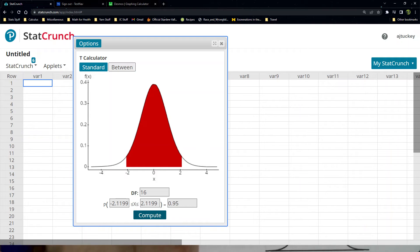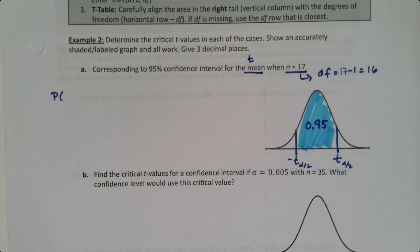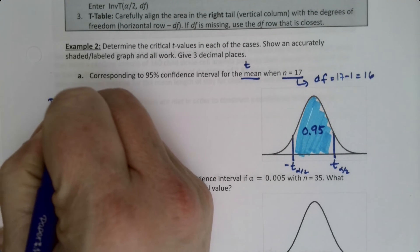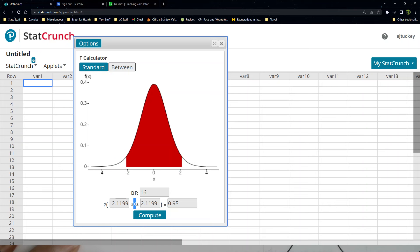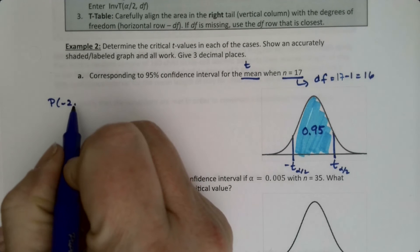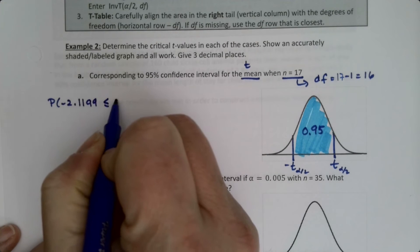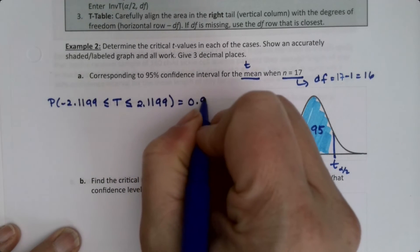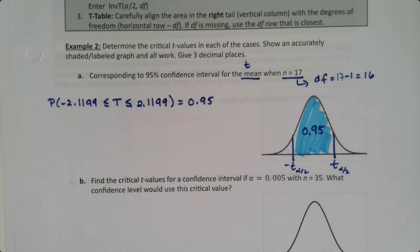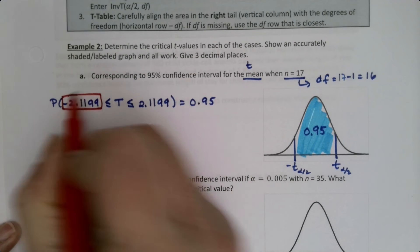Okay. So we write that down. So P, and then I know it says x, but that's because they programmed it weirdly. I mean, it is a random variable x, but I'm going to call it T. So the probability that negative 2 point, oh, fiddlesticks. I already forgot what the number was. 2.1199. There it is. 2.1199. I always use just whatever StatCrunch gives me. And it gives four decimal places, so I just stick with that. Is equal to 0.95. So your T values, which is what you were looking for, are right here and right here.